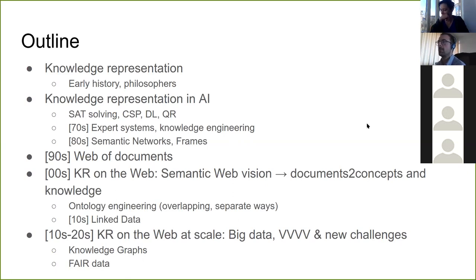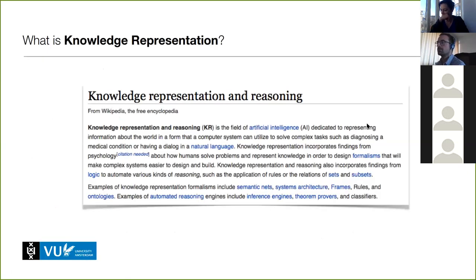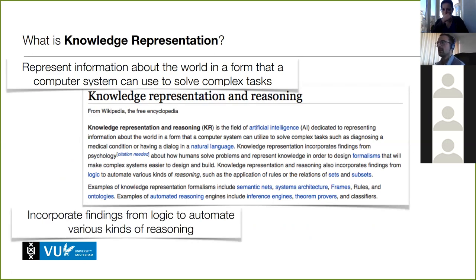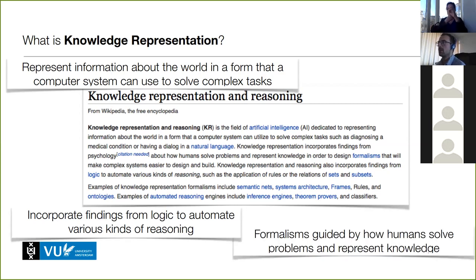Before we get into that — what is knowledge representation? If you go to the Wikipedia page, you'll find plenty of stuff. It's a field of AI about representing information about the world in a form that a computer system can use to solve complex tasks. It's about incorporating findings from logic to automate various kinds of reasoning.